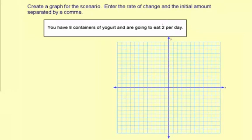So this is a linear function scenario and we have the initial amount right here is eight. That's the amount you start with.